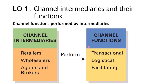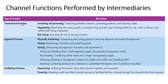There are three types of functions performed by intermediaries: transactional functions, logistical functions, and facilitating functions. In transactional functions, intermediaries perform contacting and promoting, negotiating, and risk-taking — basically getting things done transaction-wise. For logistical functions, it involves moving the physical goods — physically distributing the product, transporting from one place to another — to overcome discrepancies such as temporal discrepancy and spatial discrepancy.